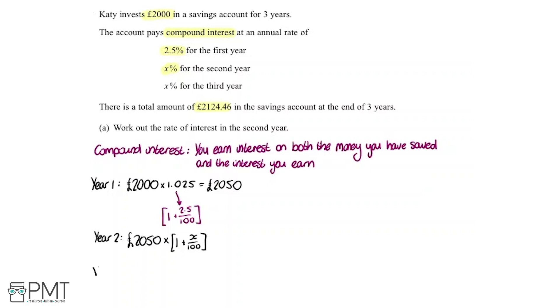I'm now going to move on to year three. In year three, all of this is going to be our starting point. So we're going to start with that, we've got 2050 multiplied by 1 plus x over 100. That's our starting point.